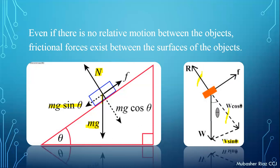Here we note that there are two types of friction. One is called static friction and the other is called kinetic friction — which we have explained through these two examples.